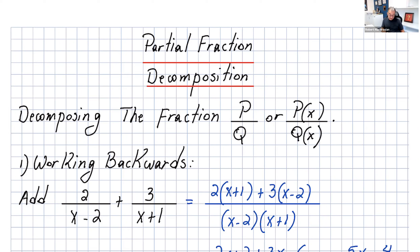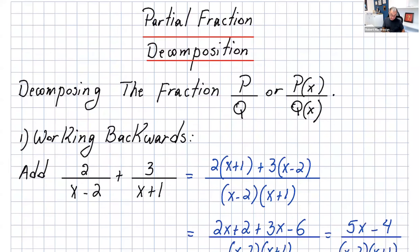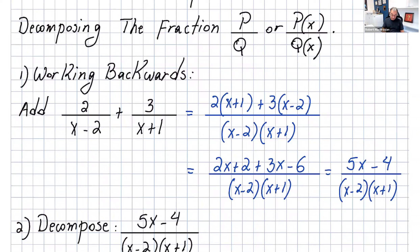Now what is the goal of a partial fraction decomposition? You have a fraction p over q and both of them are polynomials, and what you want to do is decompose that. To understand this better, let's go backwards with a simple example. If you want to add these two fractions — 2 over x minus 2 plus 3 over x plus 1 — of course you find the LCD, so you multiply both denominators since these are prime factors. To find the LCD you multiply them, and then you multiply 2 times x plus 1